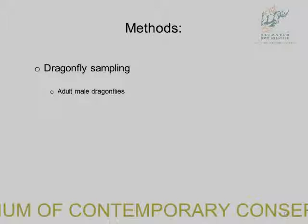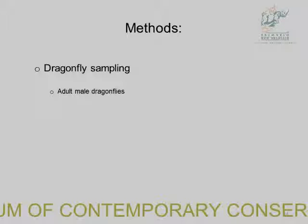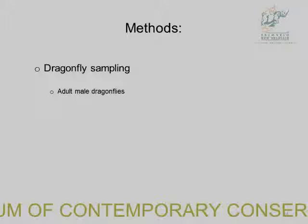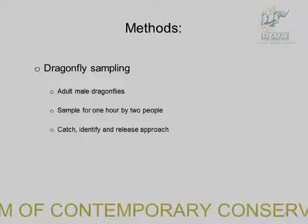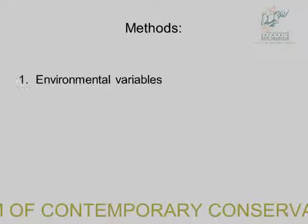For dragonflies, I sampled adult male dragonflies because they are territorial and hang around open waters. I covered the whole wetland but concentrated on open waters. Sampling was done by two people for one hour — catch, identify, and release, although I did keep some specimens. I used the Samways identification protocol.